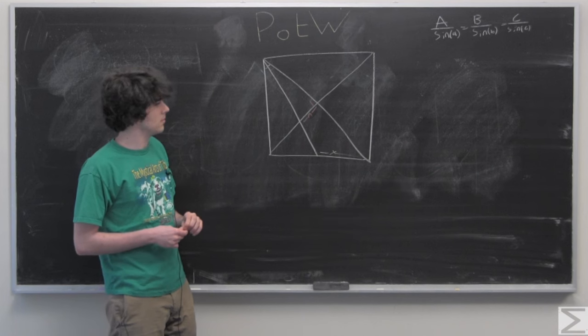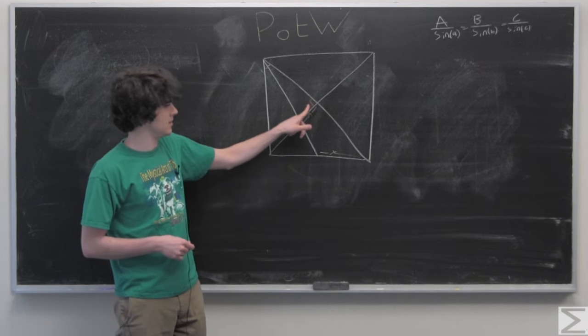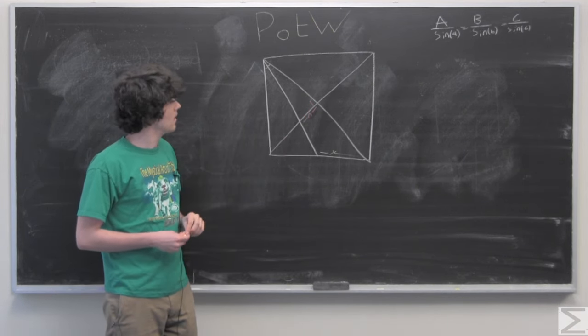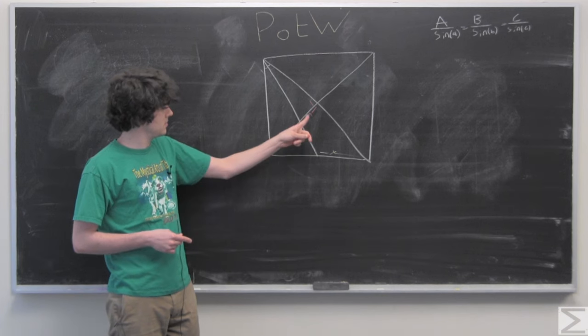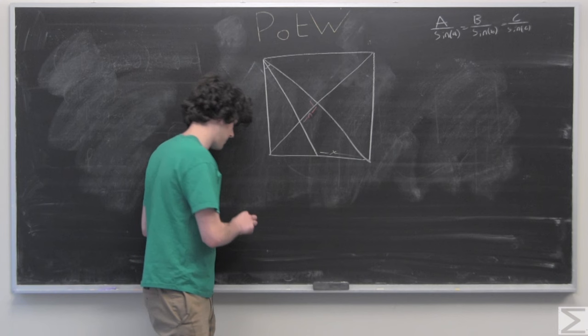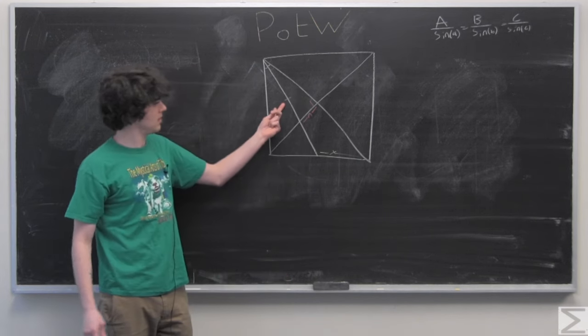Fortunately, with this square, we know that the diagonals intersect at right angles. So we can use the law of sines to solve for this side.